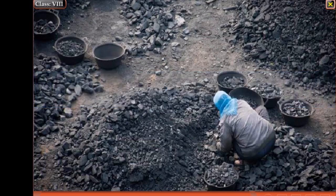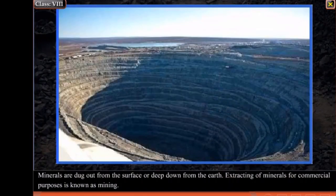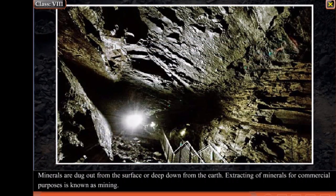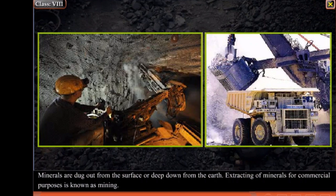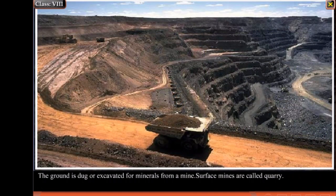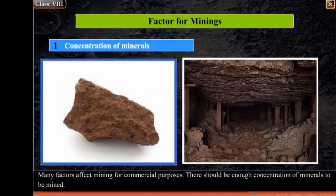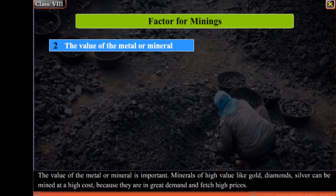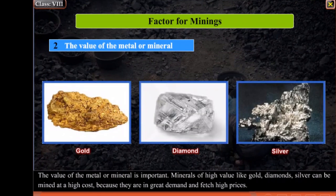Mining: Minerals are dug out from the surface or deep down from the earth. Extracting minerals for commercial purposes is known as mining. The ground is dug or excavated for minerals from a mine. Surface mines are called quarries. Many factors affect mining for commercial purposes. There should be enough concentration of minerals to be mined. The value of the metal or mineral is important. Minerals of high value like gold, diamonds and silver can be mined at a high cost because they are in great demand and fetch high prices.